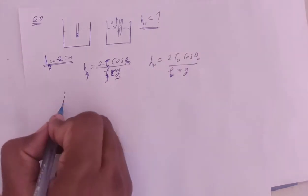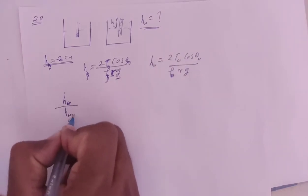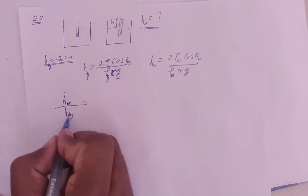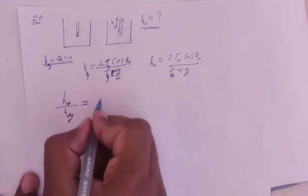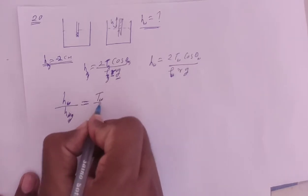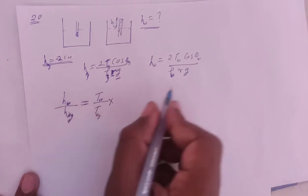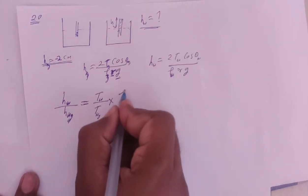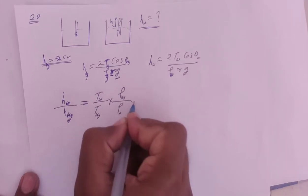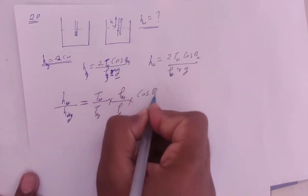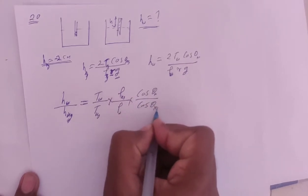Let's take the ratio of both. h_water upon h_mercury equals surface tension of water upon surface tension of mercury, times density of mercury upon density of water, times cos angle of water upon cos angle of mercury.